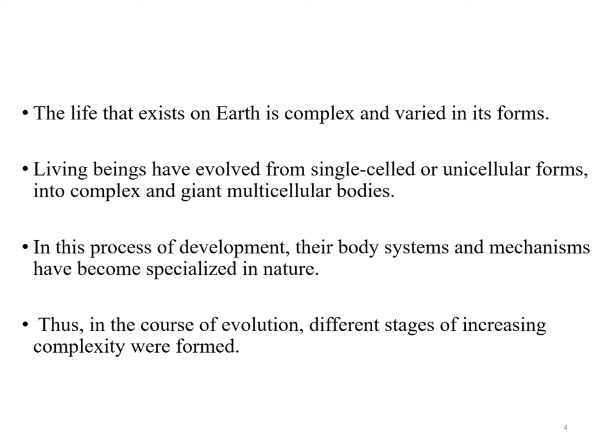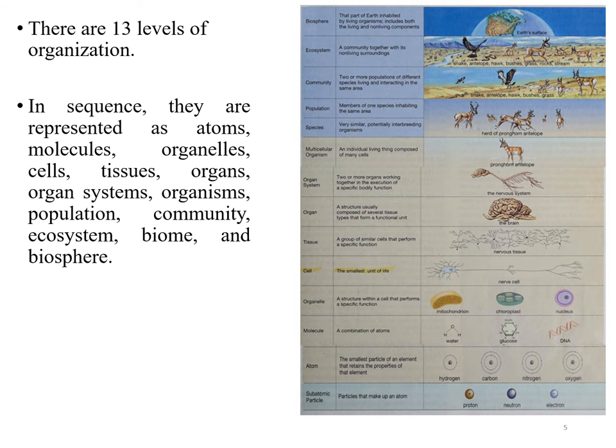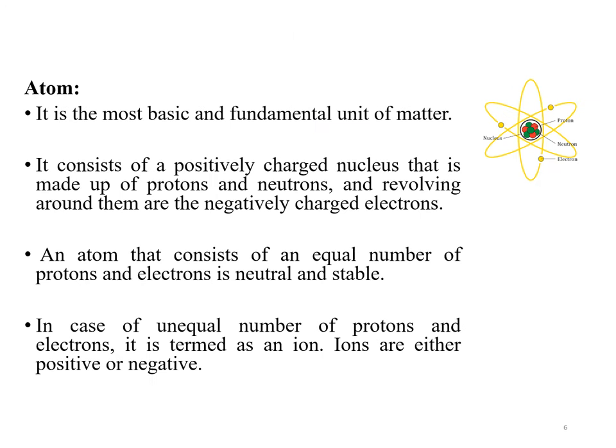The life that exists on earth is complex and most diverse in its form. Living beings have evolved from single-cell or unicellular forms into complex and diverse multicellular bodies. In this process of development, their body systems and mechanisms have become specialized in nature. In the course of evolution, different stages of increasing complexity were formed. As we all know, there are 13 levels of organization, represented in sequence as: atom, molecules, organelle, cells, tissue, organs, organ system, organism, population, community, ecosystem, biome, and biosphere.